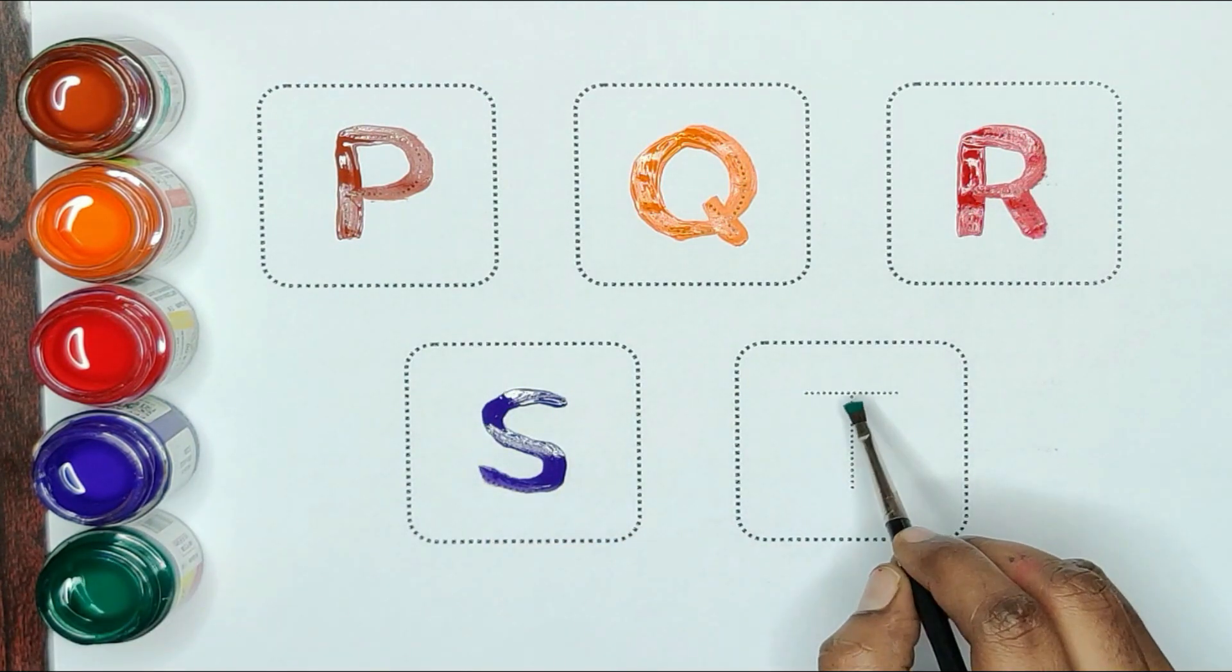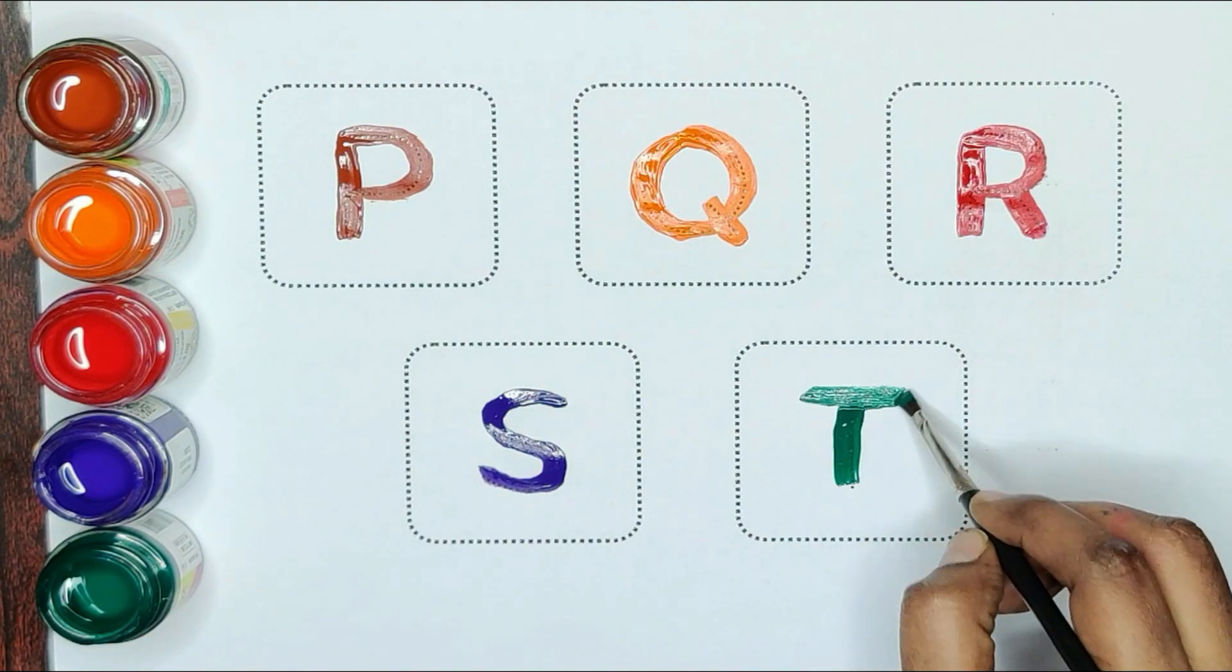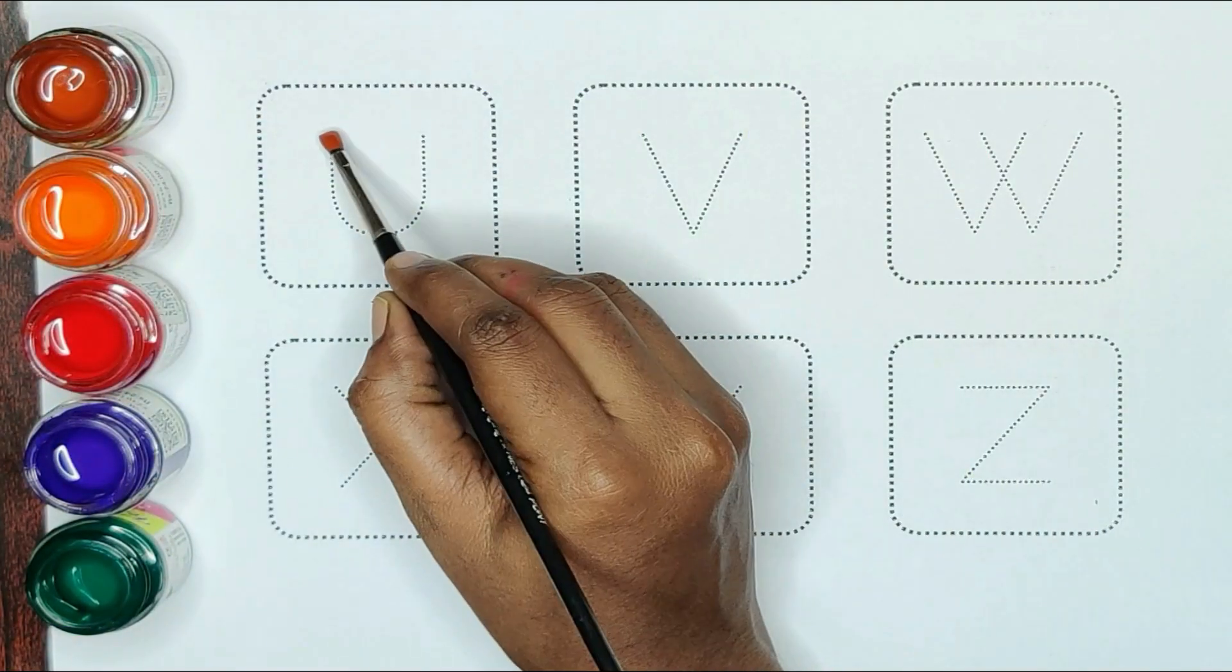Green color, T. T for train. Brown color, U.